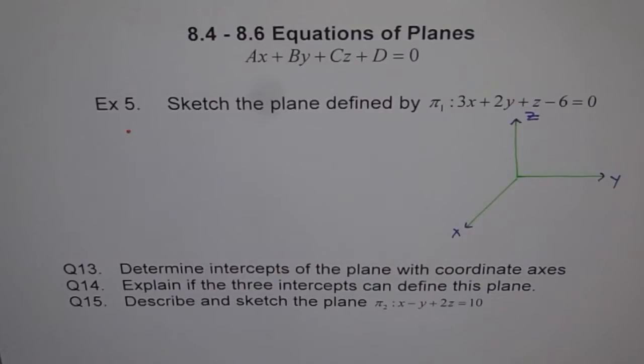Example 5. Sketch the plane defined by pi 1: 3x plus 2y plus z minus 6 equals 0.